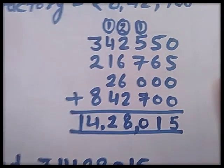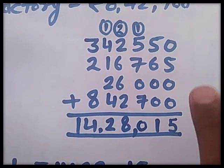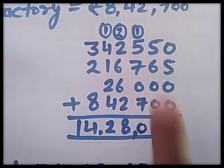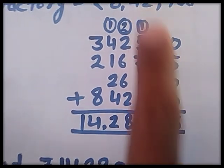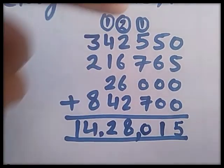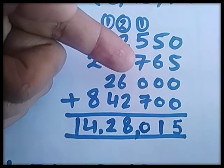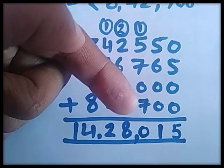First, 0 plus 5 plus 0 plus 0 is equal to 5. Next, 6 plus 5 is 11, carry 1. 5 plus 1 is 6, 6 plus 7 is 13, 13 plus 7 is 20. Carry 2.